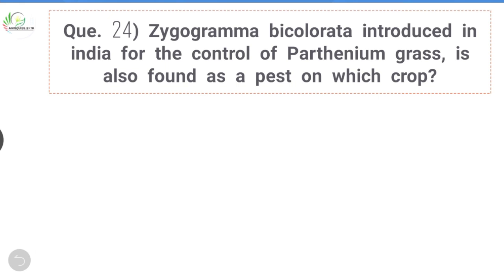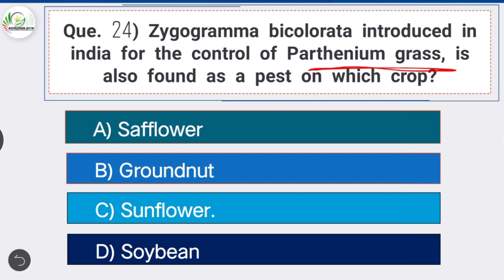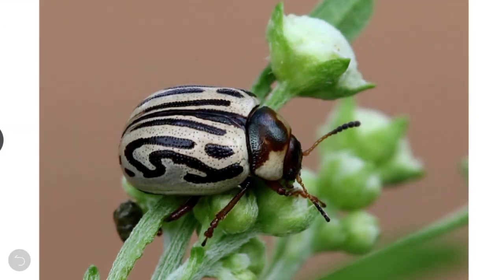Question 24: Zygogramma bicolorata, introduced in India for the control of parthenium weed, is also found as a pest on which crop? Option C is the correct answer: sunflower. The Mexican beetle Zygogramma bicolorata is an effective biocontrol agent of parthenium, introduced in 1983 from Mexico to Bangalore. Its feeding was also noticed on sunflower but at a lower rate, and parthenium remains the more preferred host.